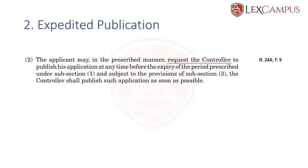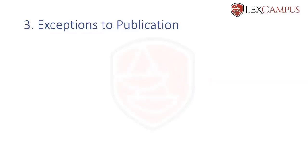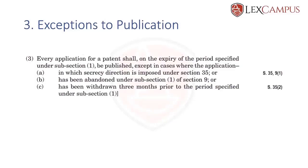The second point is the provision for expedited publication. The third thing is that there are exceptions to publication — instances where an application is not published at all. There are three such instances. The first instance is where a secrecy direction is imposed under Section 35. As long as the secrecy direction continues, the application is not published. For example, if the secrecy direction continues for 24 months, the application is not published until the direction is revoked.